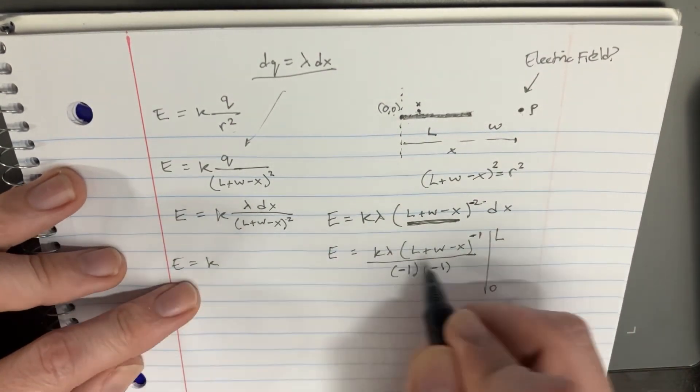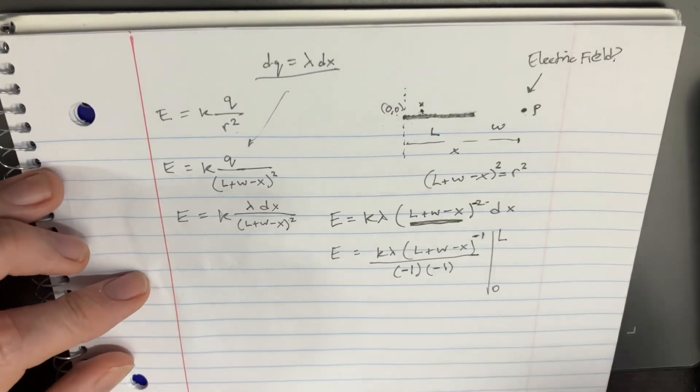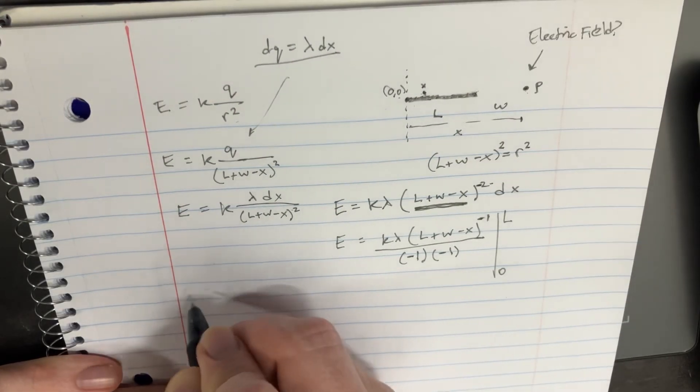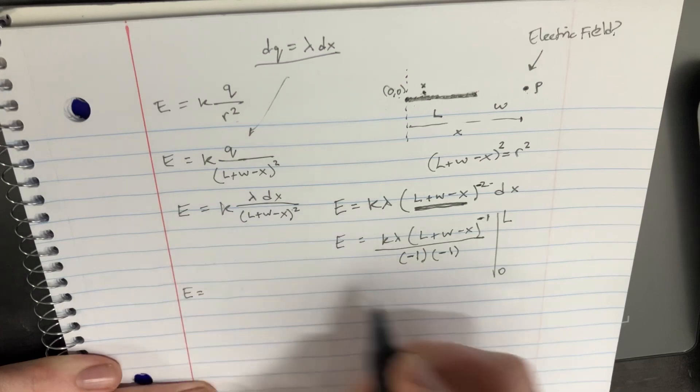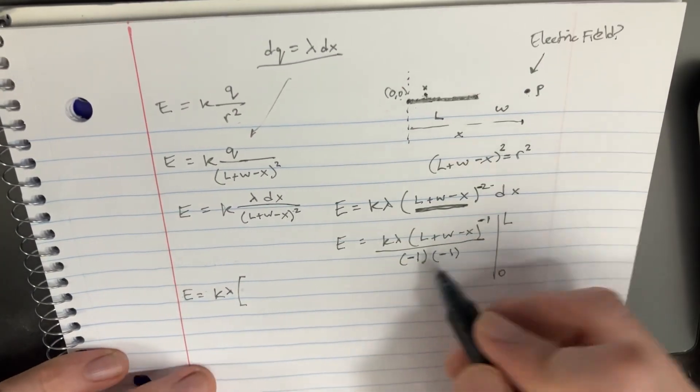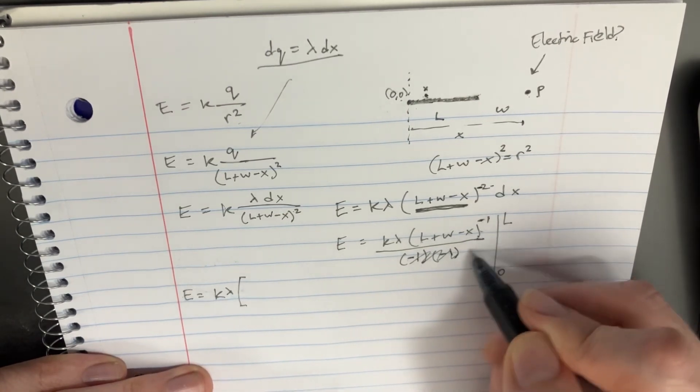And so then you can plug in L, and the first one, I'll give it a little bit of space, because we're going to need to subtract. All right, so the answer to this is going to be something like E equals K lambda, and then we're just going to put everything in the parentheses from now, because obviously this is going to go away, and you're going to be left with this, but it's on the bottom.